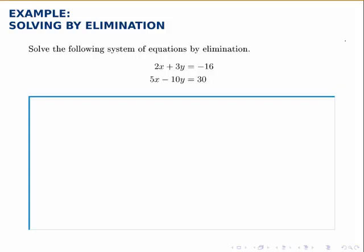Solve the following system of equations by elimination: 2x plus 3y equals negative 16 and 5x minus 10y equals 30.